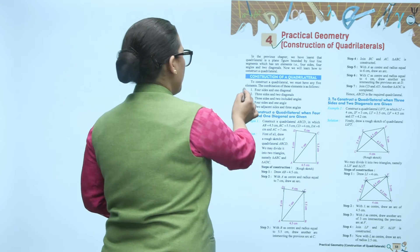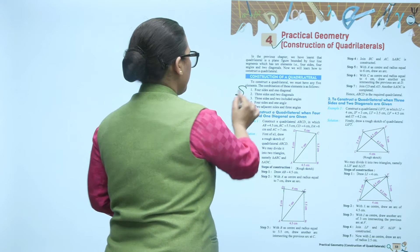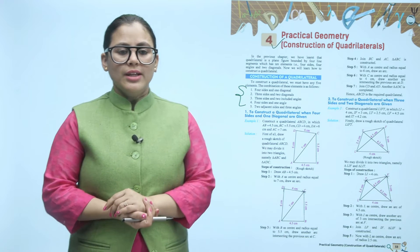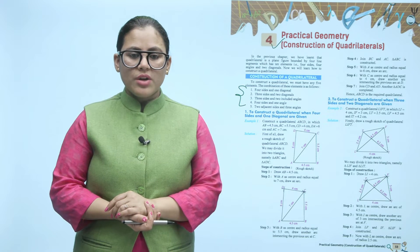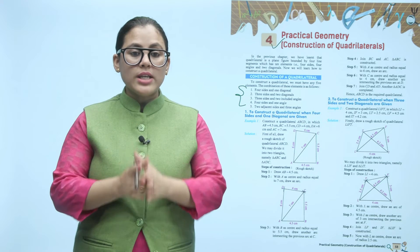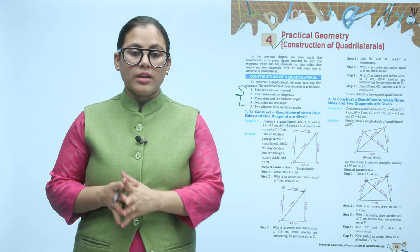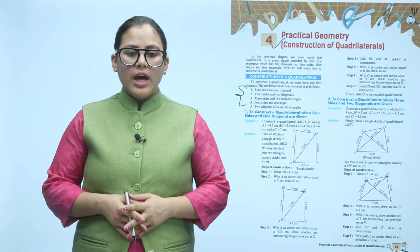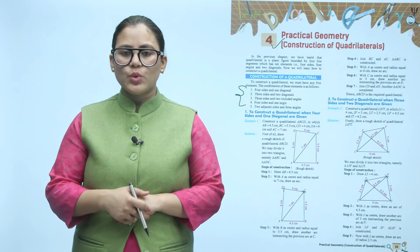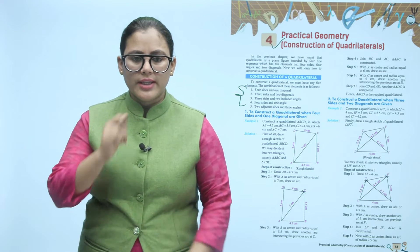If we know any one of these combinations, we can construct a quadrilateral. Now, to construct a quadrilateral when four sides and one diagonal are given — if you have four sides and one diagonal given, how do we draw it?